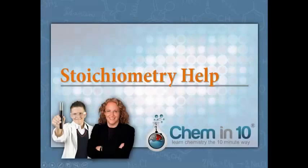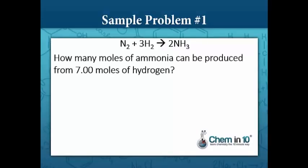Hi, this is Melanie Fine with Chem in 10, and today I'm going to help you solve stoichiometry problems. Let's start with a sample problem. We have a reaction between nitrogen gas and hydrogen gas to make ammonia gas, and the question is: how many moles of ammonia can be produced from seven moles of hydrogen?